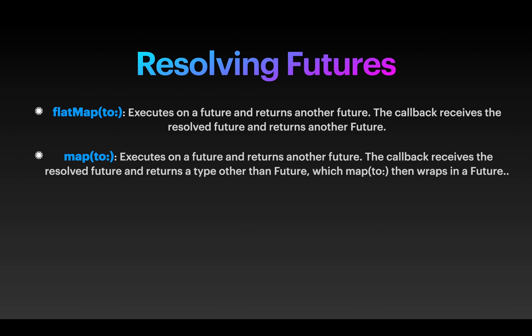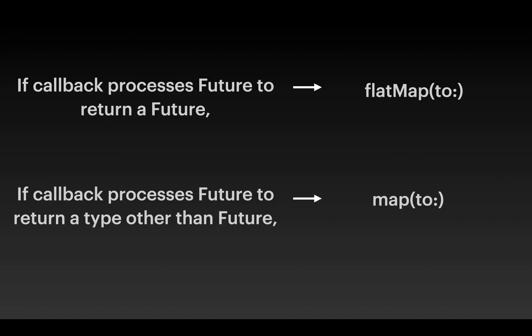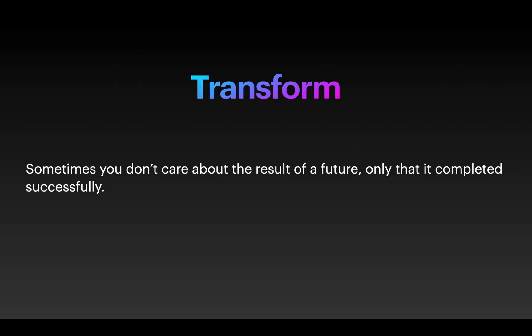Both functions take a future and produce a different future, usually of a different type. To reiterate the difference: if the callback that processes the future result returns a future, then you use flatmap2. If the callback returns a type other than a future, then you use map2. Sometimes you don't care about the result of the future — you only care that the function has been executed successfully. In that case you can use the transform2 function.